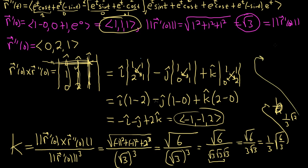So the final answer is the curvature equals the square root of 2 over 3. You don't have to simplify that far — I just wanted to clean it up by combining into one square root.